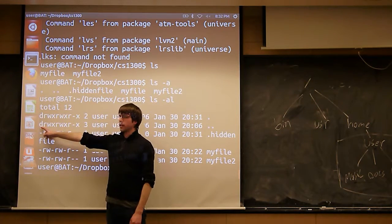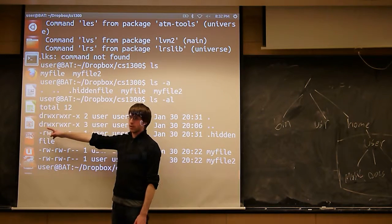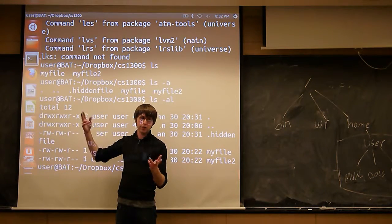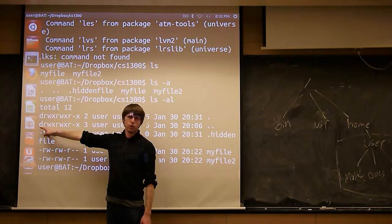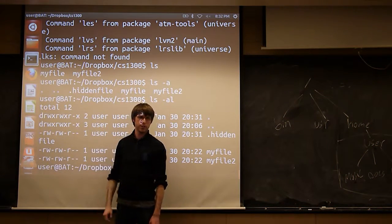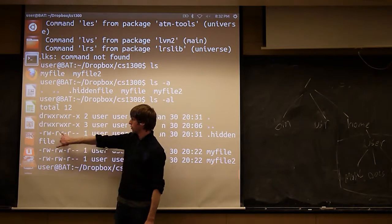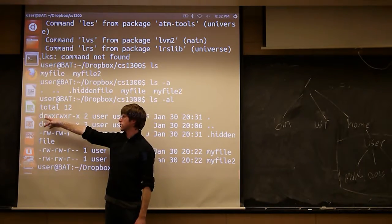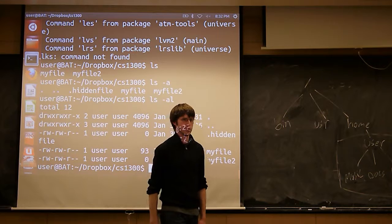So we're seeing all three of my files and my two directories. And getting back to your point, you'll notice that the two directories, the dot and the dot dot in this case, I mean they're special directories but they're still directories, start with a d. Whereas all of the other files start with just dash. So these are regular files, these are directories. You can tell by whether or not start with a d.